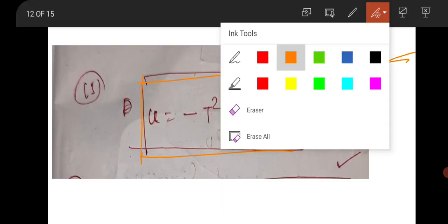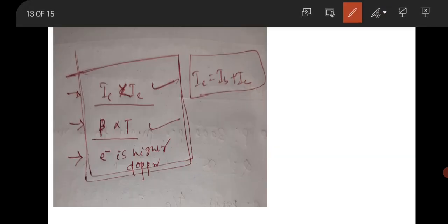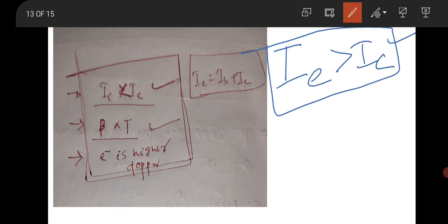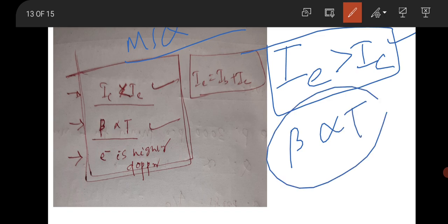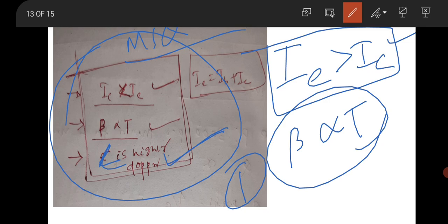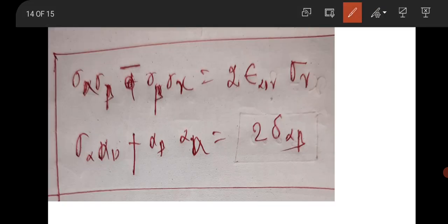There is a question from BJT. The emitter current is always greater than the collector current IC — this statement was correct and it was an MSQ question. The gain factor β is always dependent on temperature. The emitter is highly doped because it provides the charge carriers. These three options will be correct. This question was for one mark.